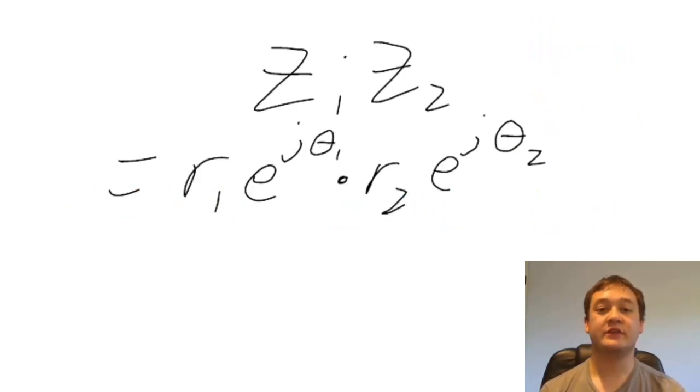Multiplying two complex numbers in polar notation is much easier. We can multiply the two r values together, and then we add the exponents together.